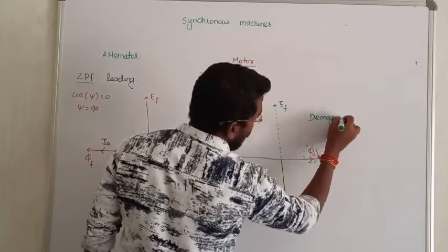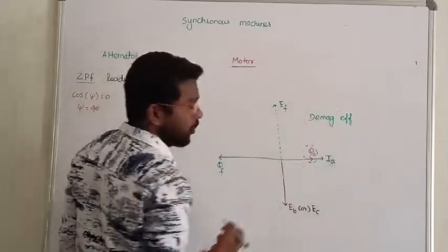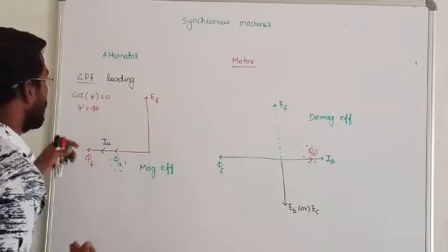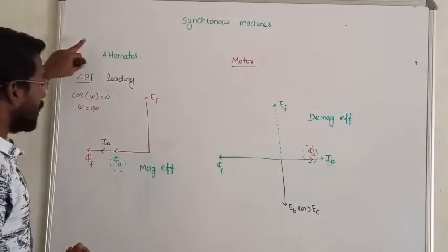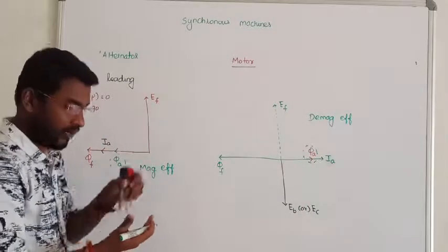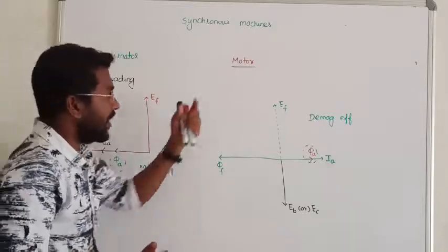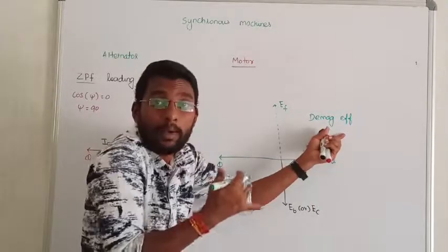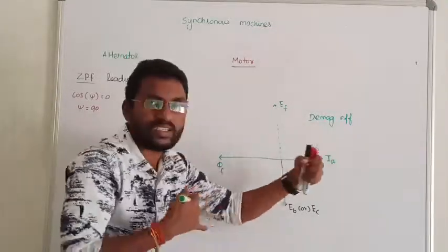So what is the conclusion? In alternator, zero power factor leading, magnetization effect. The flux strength increases. Whereas in motor, demagnetization effect. It is reducing the strength of the flux. Clear?